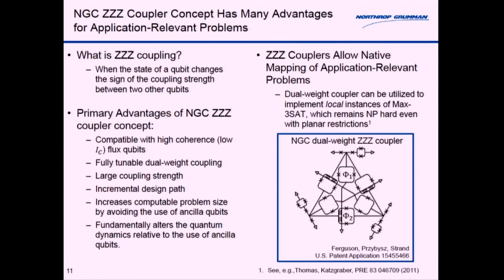Just to note quickly that 3SAT problems even on a planar graph remain NP-hard. For our particular ZZZ coupler it is actually a fully tunable dual weight coupling so you can choose both the ZZ and ZZZ interaction strengths arbitrarily. It uses an incremental design path, in particular it's very related to existing coupling strategies. It increases the computable problem size compared to use of ancilla qubits and because of that it fundamentally alters the quantum dynamics, and that may be relevant for systems going forward.